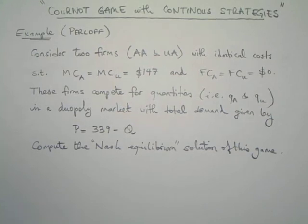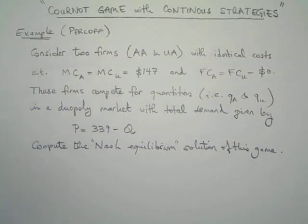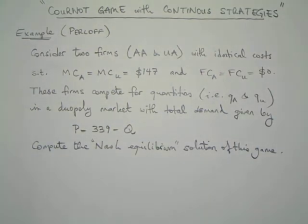Now in this game we generalize this. We will relax this constraint and we will let the firms pick any number of passengers. In that case we can generalize our previous example. As we mentioned earlier, this example is provided by Perloff's textbook Microeconomics.